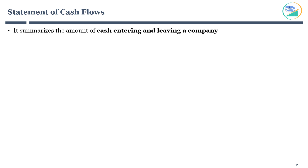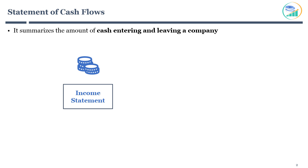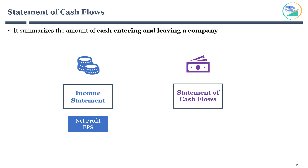Statement of cash flows tells you how much cash is entering and leaving a company in a given period. Income statement records a company's net profit and earnings per share, whereas statement of cash flows summarizes the amount of cash entering and leaving a company. How is statement of cash flows different from income statement? Let's try to understand the difference with an example.